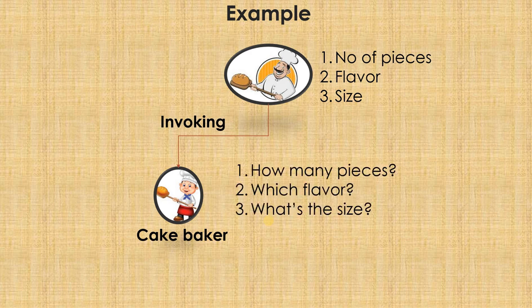And similarly, the questions that are asked by the cake baker are how many number of pieces, which flavor, what is the size. The number of questions that are asked by the baker and the number of answers that are given by you should be same. That means number of arguments which are passed by the main function and the number of parameters that are being accepted by the function should be same.